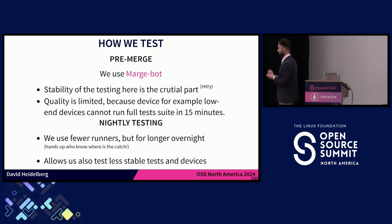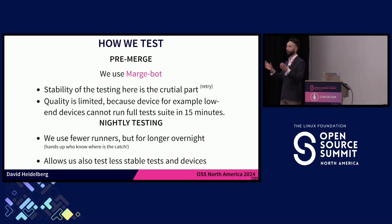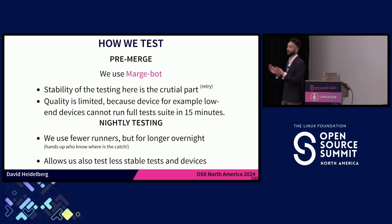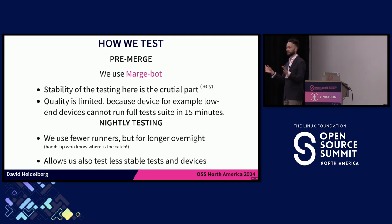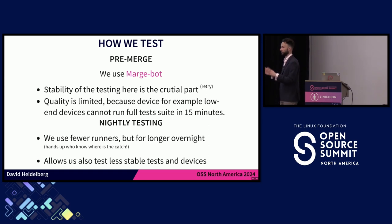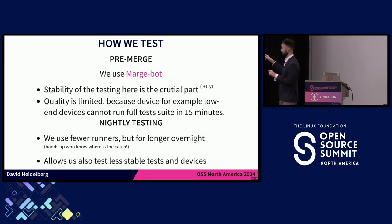The second challenge is quality. VK CTS has something like 2.8 million tests, and on low-power embedded devices you cannot run all tests in 15 minutes. What we do is parallel runs — we split each part of the test across devices, using for example 10 devices simultaneously for the same test, but it's still not enough. So what you want to do is reduce the number of tests by using some fraction. When you use a fraction you're still leaving something uncovered, which is where nightly testing comes in.